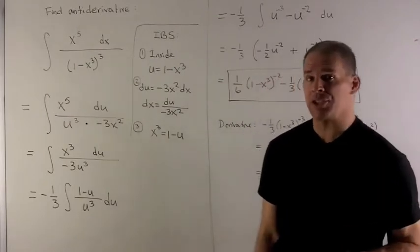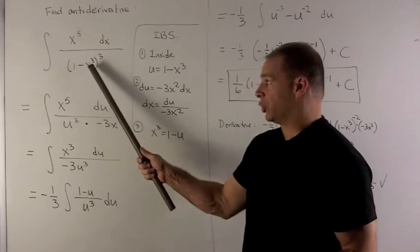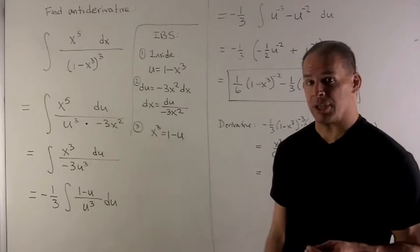Take a look at this, we see that there's a composition in the problem that would be 1 minus x cubed raised to the third power. So that means we're going to use integration by substitution.